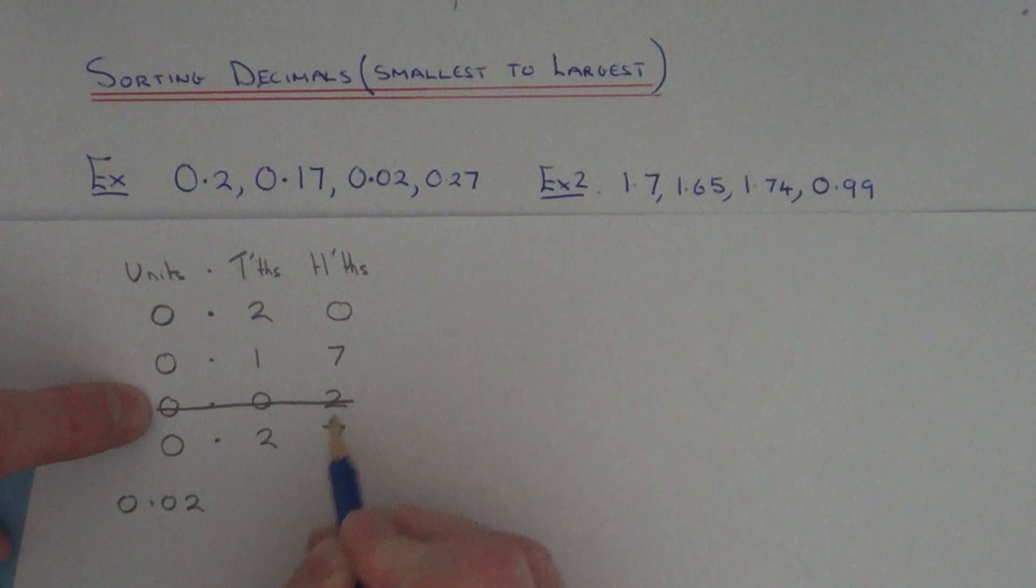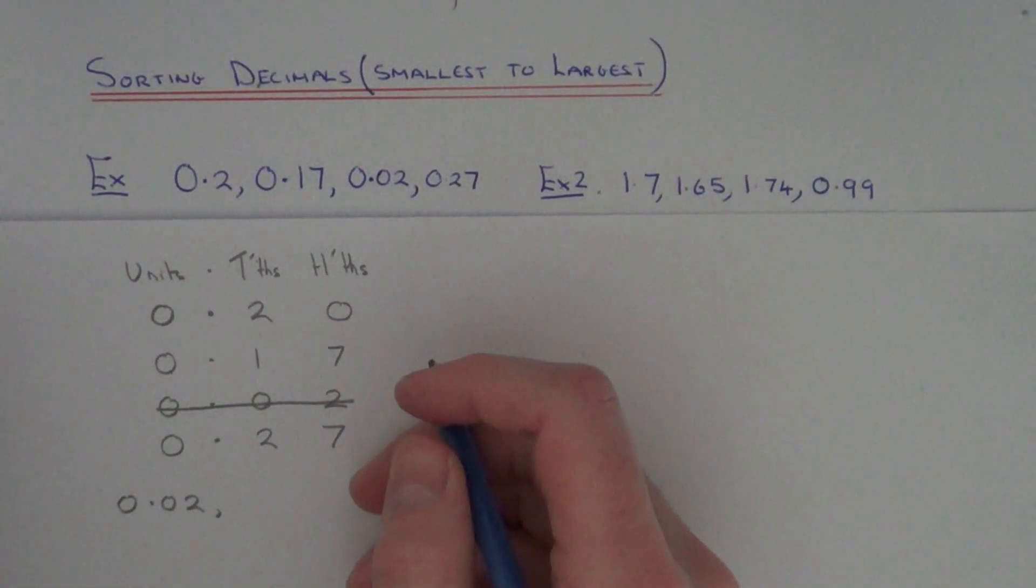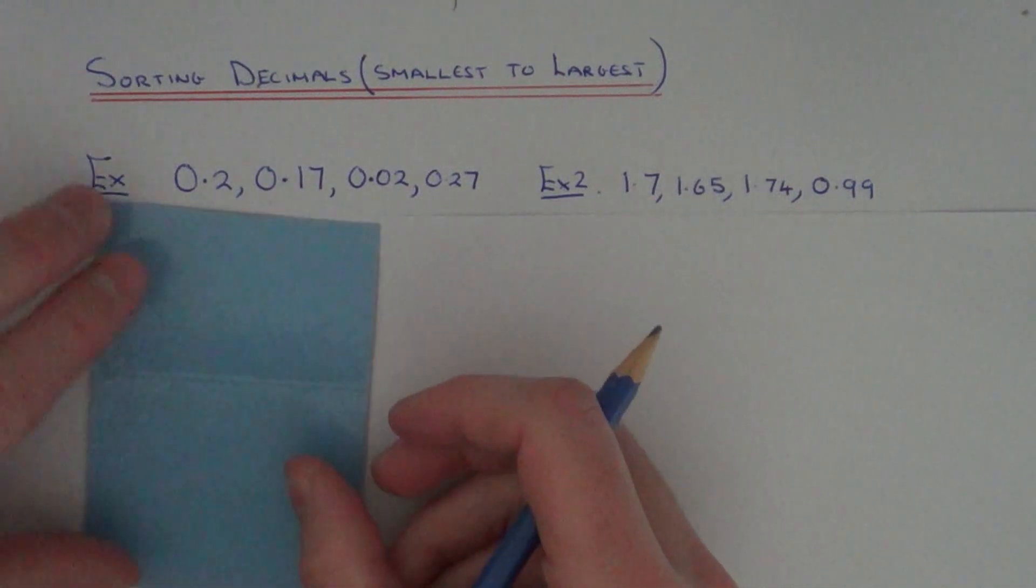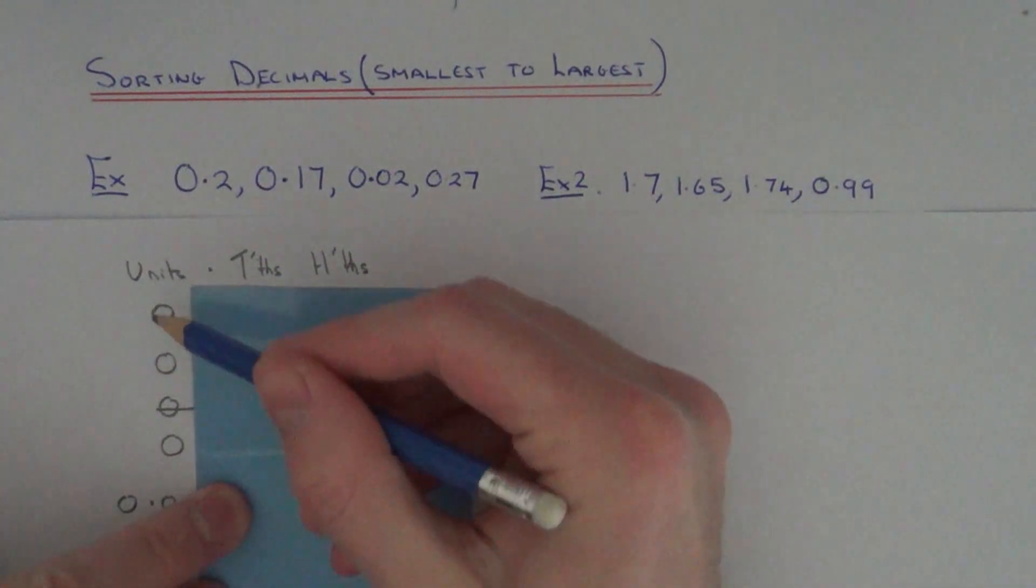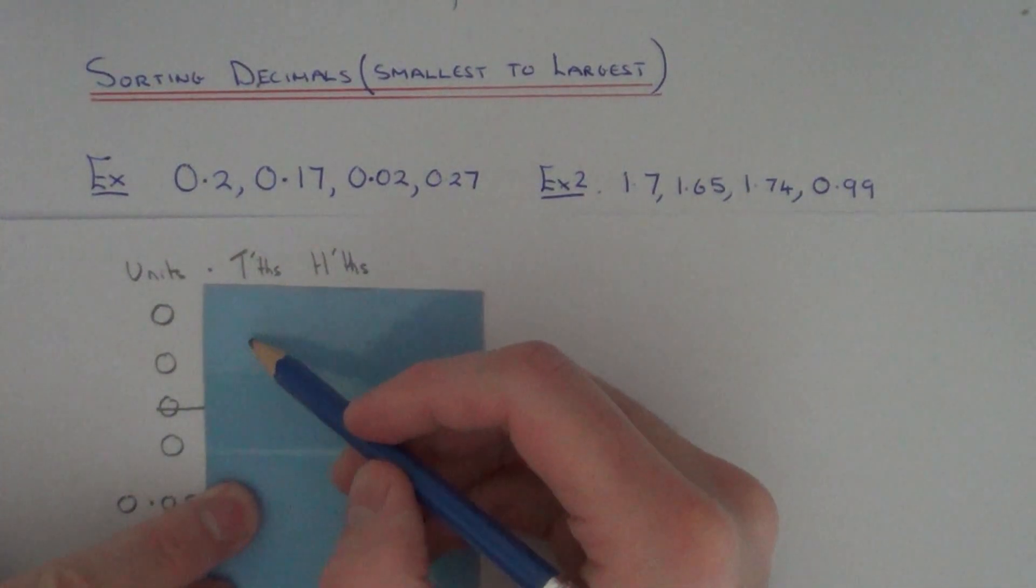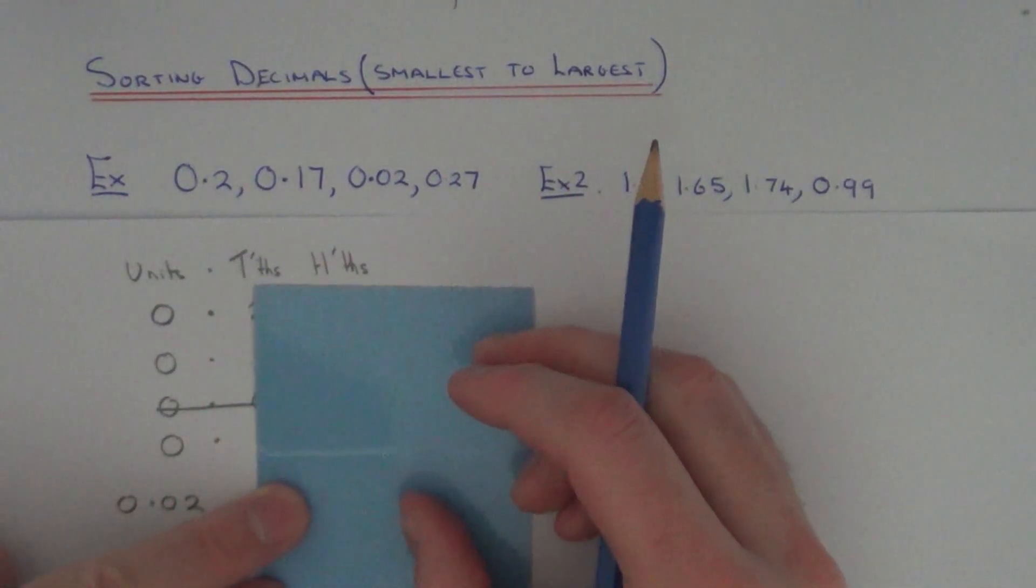So we can cross this one off our list. We just need to repeat this process now. So if you get your card back, again move it left to right. So in the units column, again they're all 0s, we can't decide which one's the smallest. So move to our tenths column.